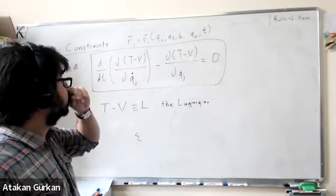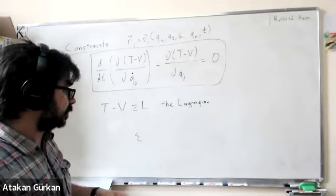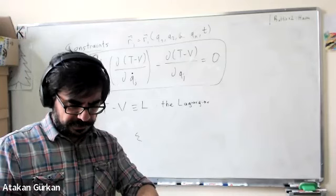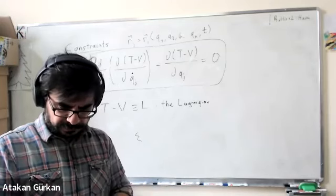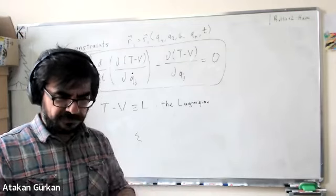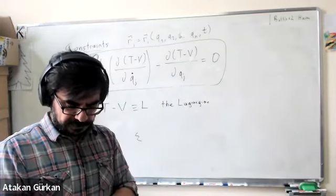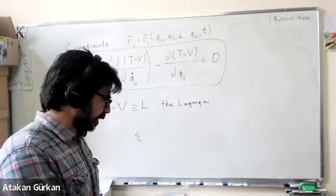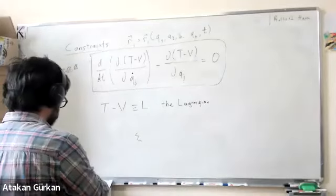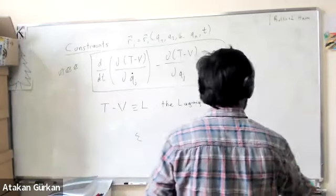We're going to take this equation and apply it to one or two problems. The book has examples of a particle moving in Cartesian and polar coordinates — I don't think they're terribly interesting, and it's easy to follow on your own. Instead, let's look at the Atwood's machine.